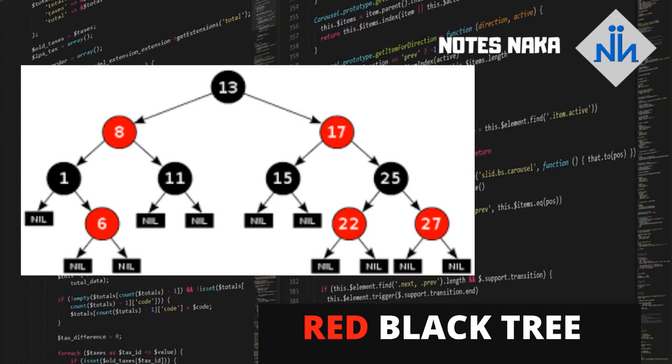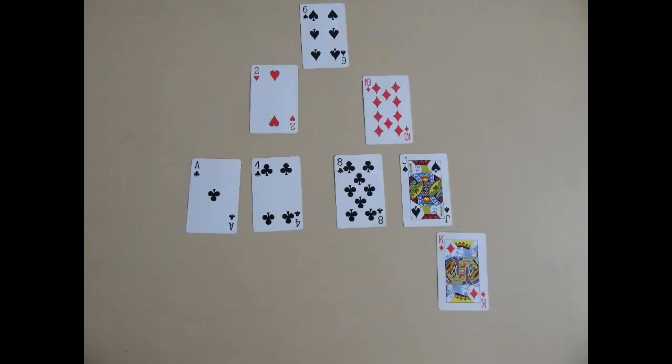A red-black tree is a binary search tree with one extra bit of storage per node, its color, which can be either red or black. By constraining the node colors on any simple path from the root to a leaf, red-black trees ensure that no such path is more than twice as long as any other, so that the tree is approximately balanced.